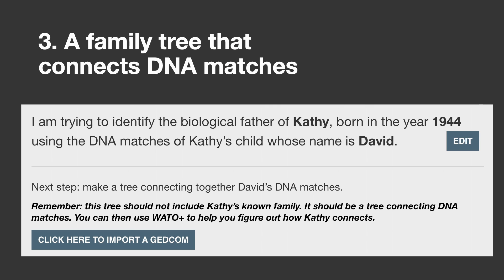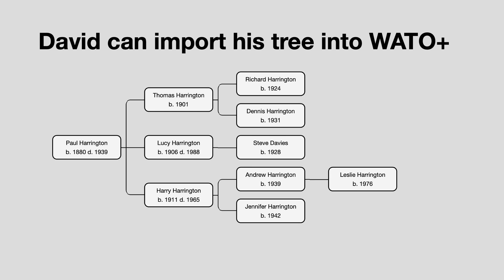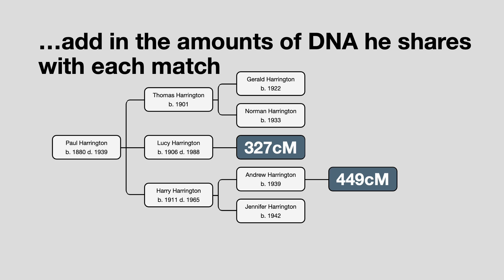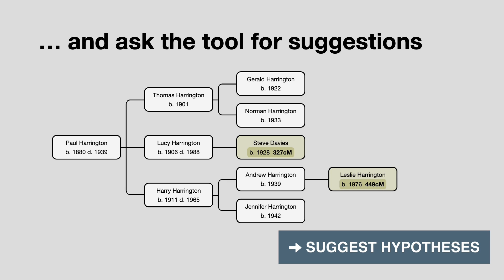The final thing you need is a family tree that connects DNA matches. That's easier said than done of course — it can be very challenging and your success is going to depend on who your matches are and also perhaps where they are in the world. As mentioned, David has already built this tree so he can import it into the tool. He can import it as a GEDCOM file, or he can also add it in manually, or import from an older version of What are the Odds. Next he needs to add in the amounts of DNA that he shares with each match, and he's then ready to ask the tool to suggest how Kathy might fit into this tree.